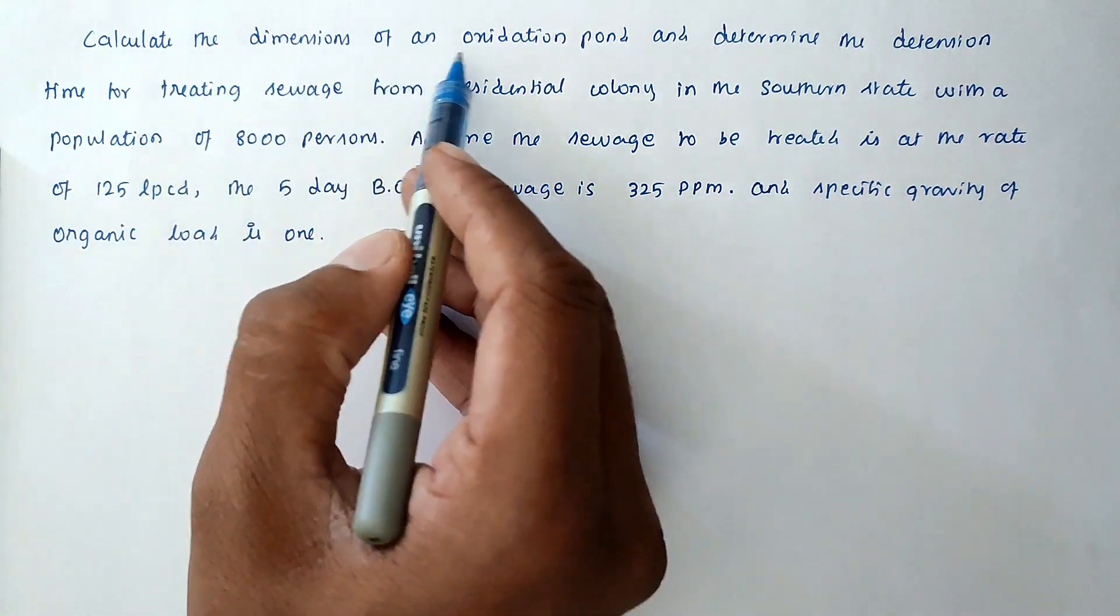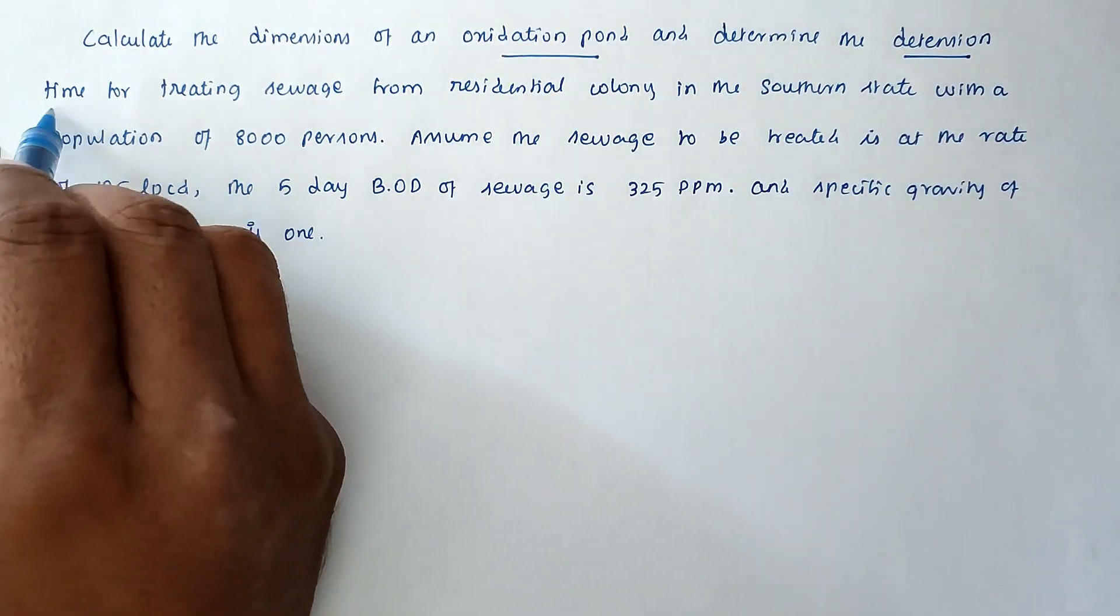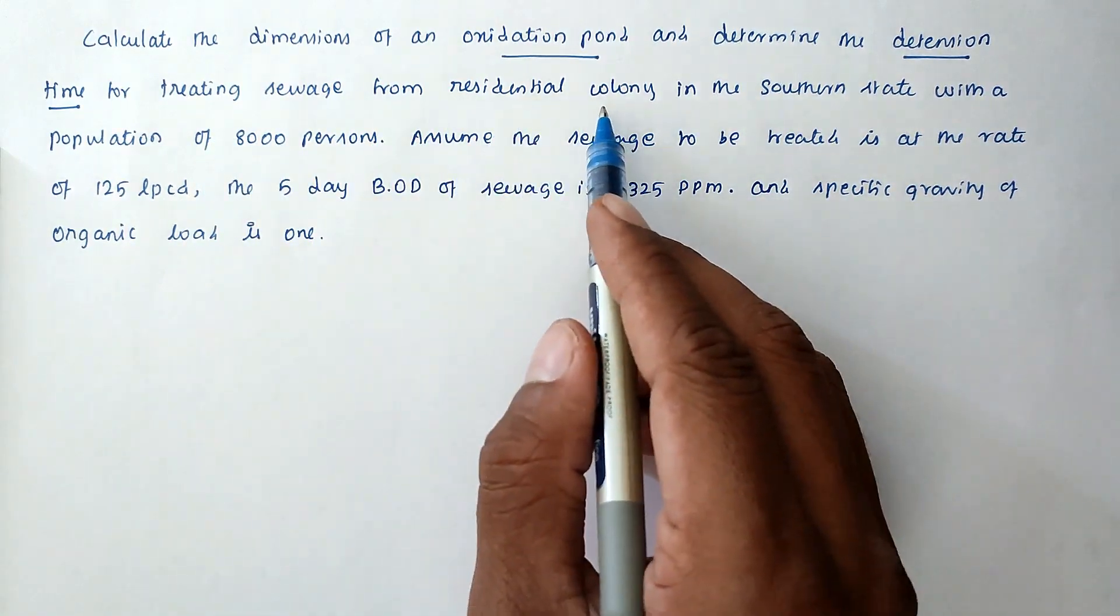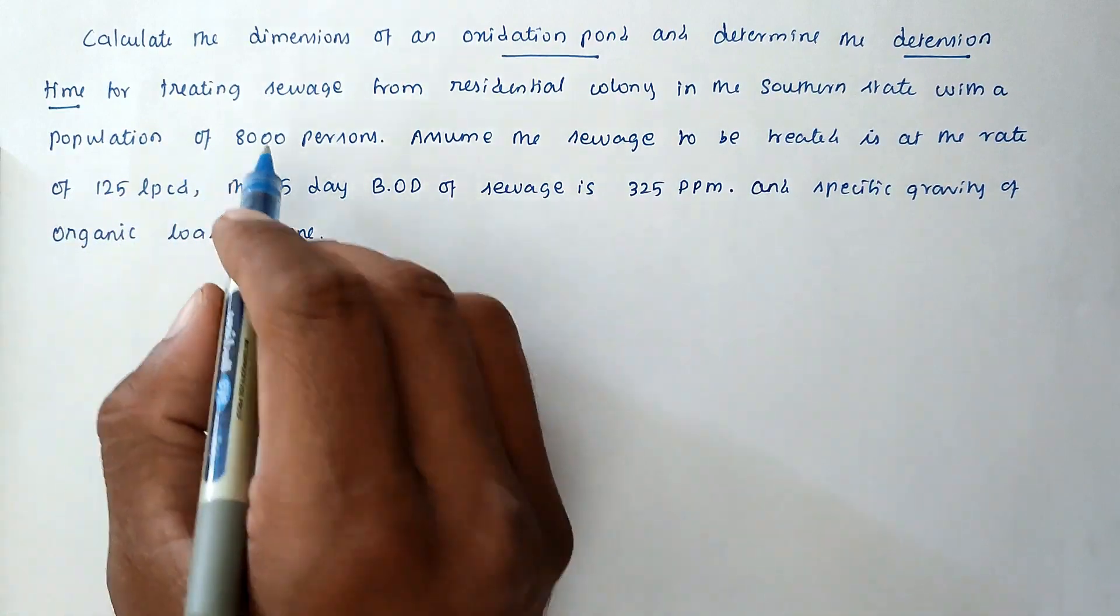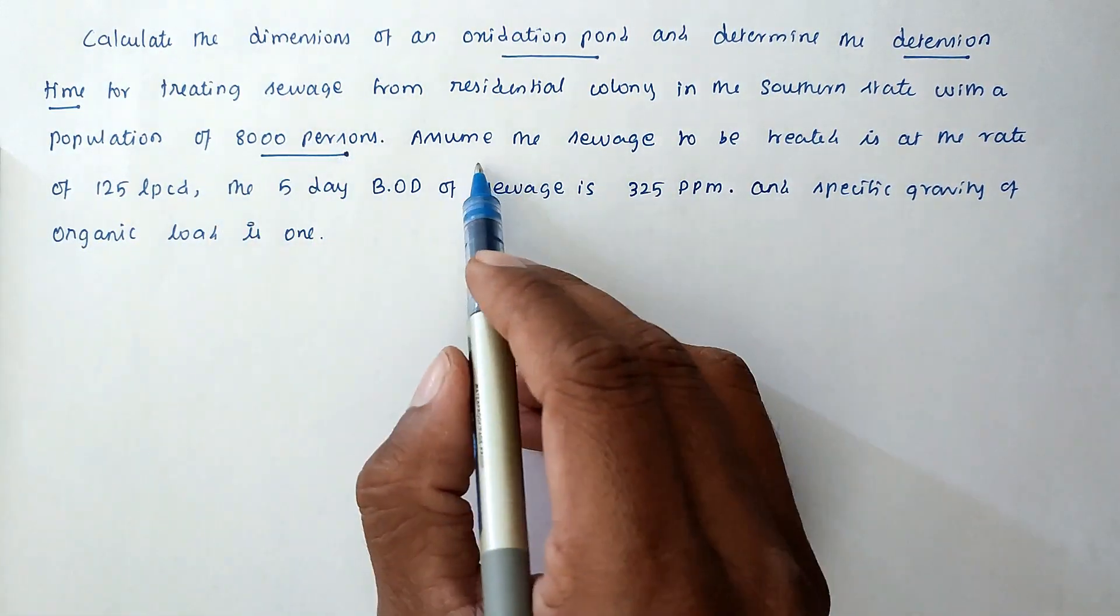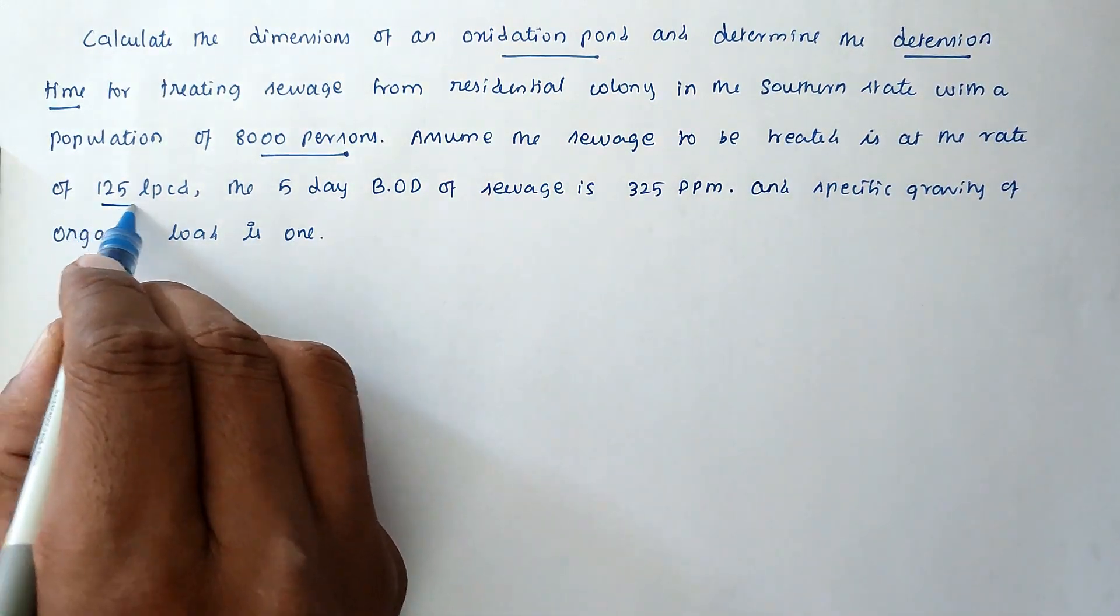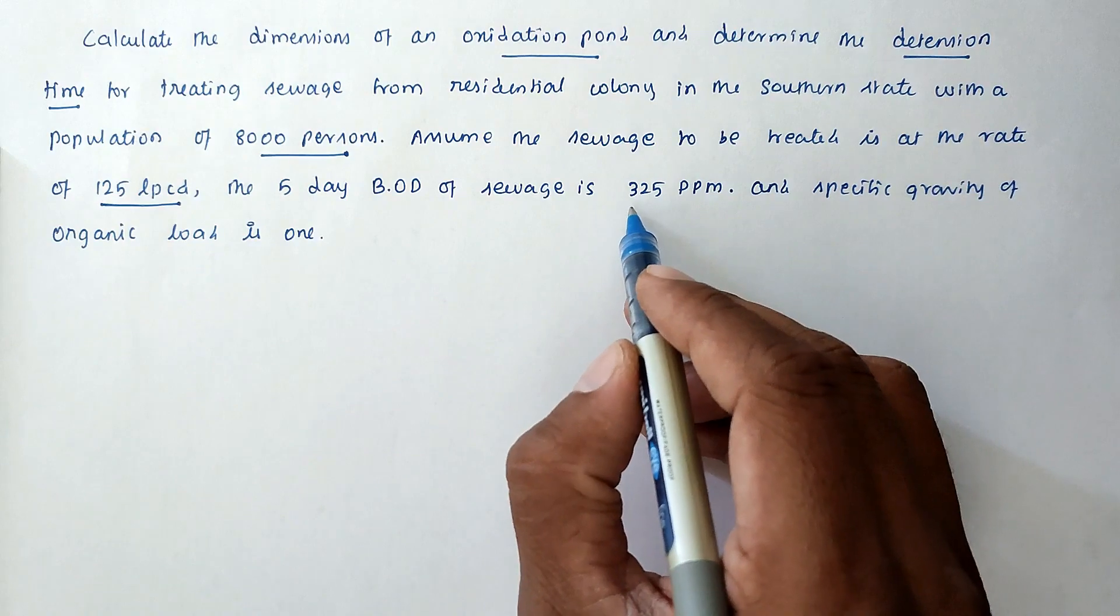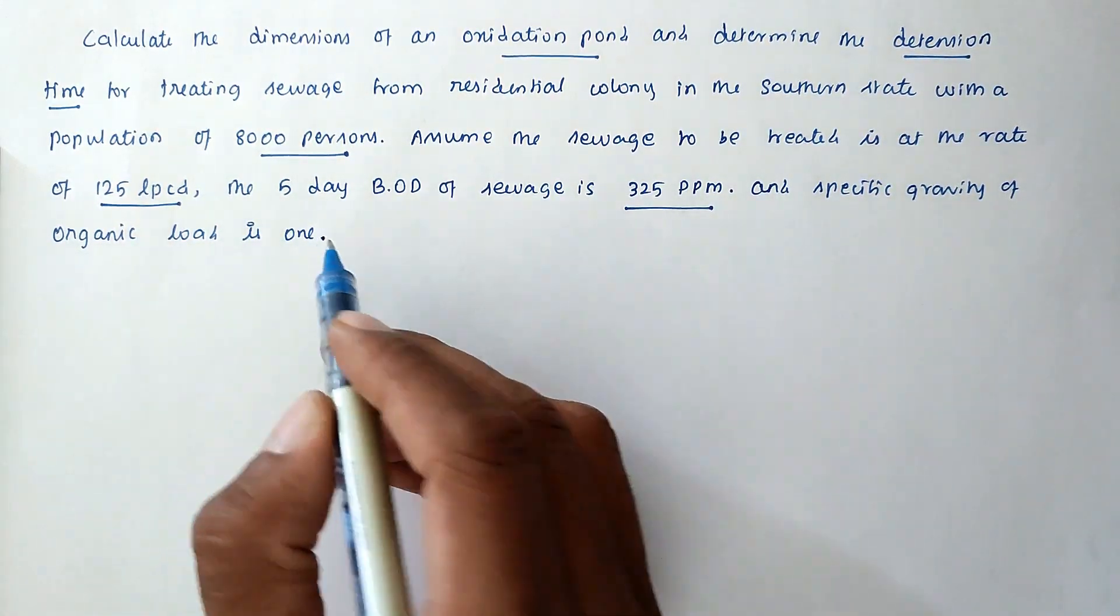The question is: calculate the dimension of oxidation pond and determine the detention period by treating the sewage from a residential colony in the southern region with a population of 8000 persons. Assume the sewage to be treated at a rate of 125 liters per capita per day, the 5-day BOD of sewage is 325 ppm, and specific gravity of organic load is 1.